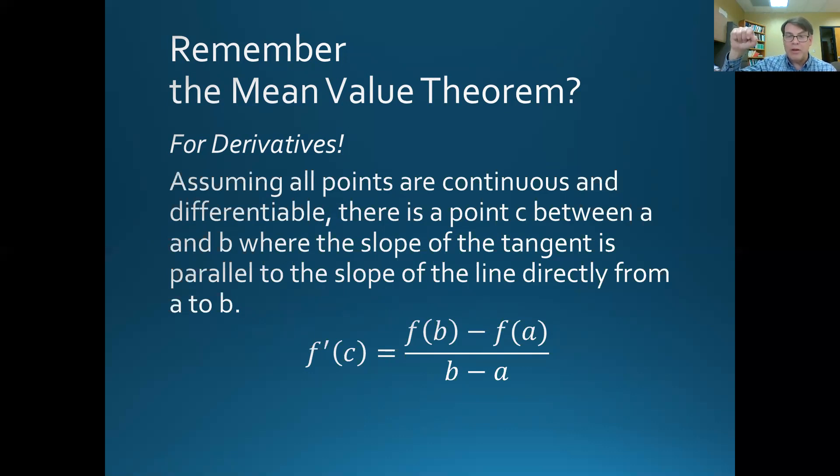y2 minus y1, that is f of b, the end point, minus f of a, the beginning point, divided by b minus a, or x2 minus x1. So that's the mean value theorem from back in Chapter 4.